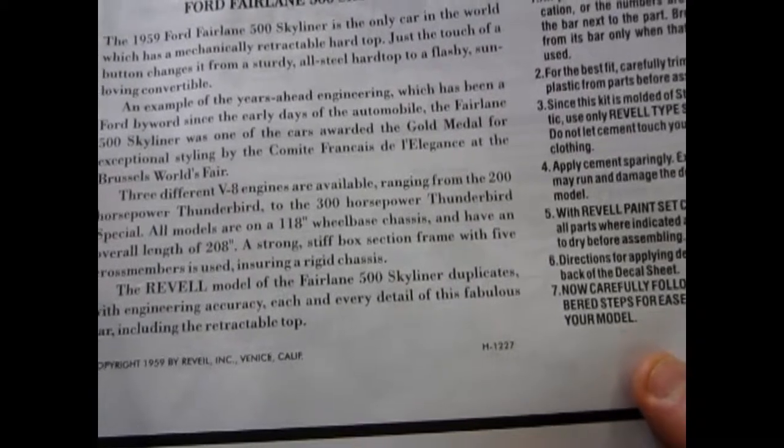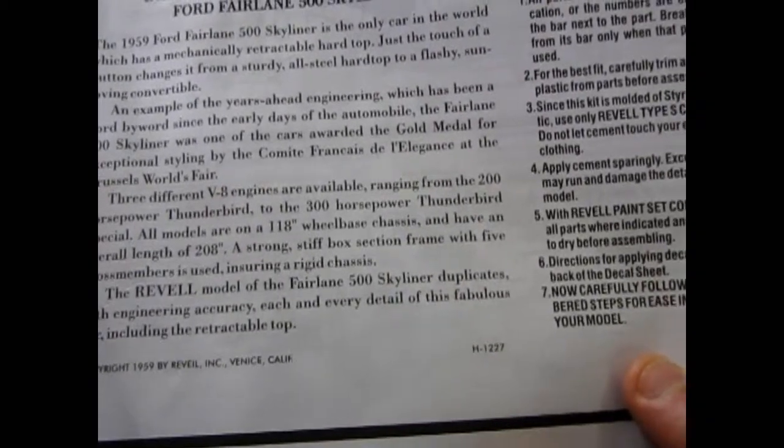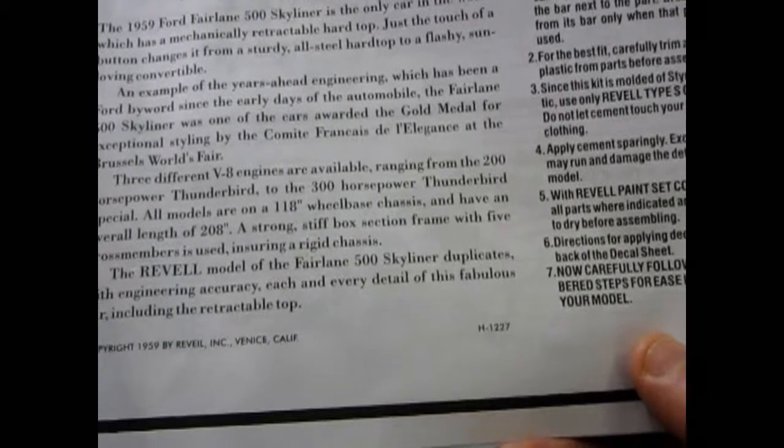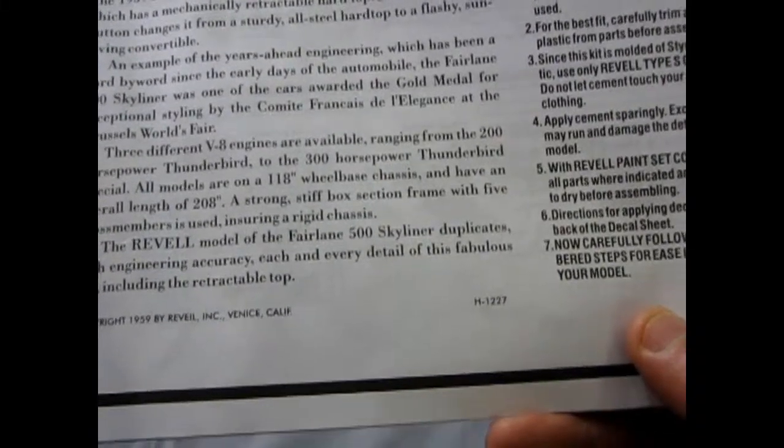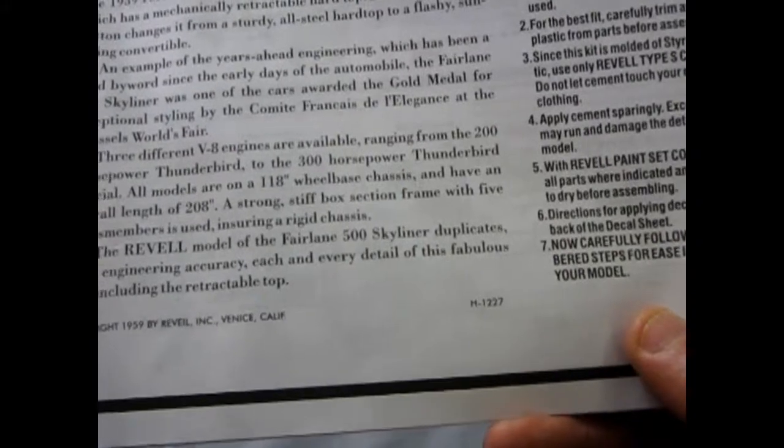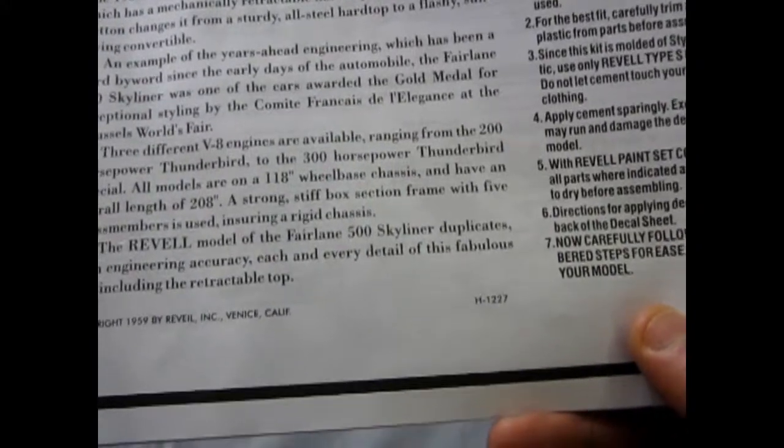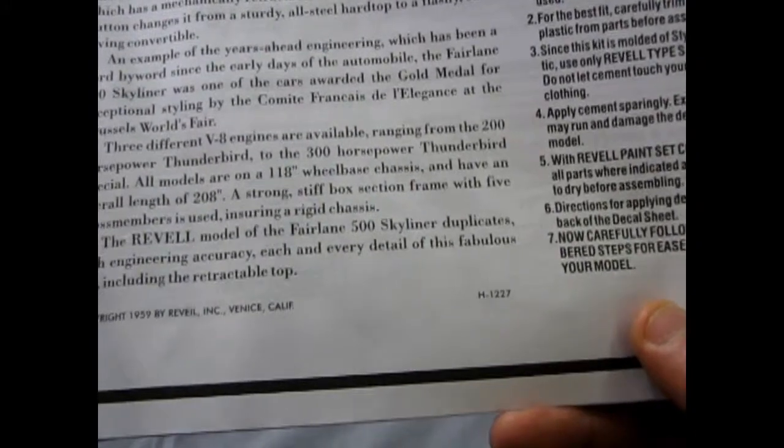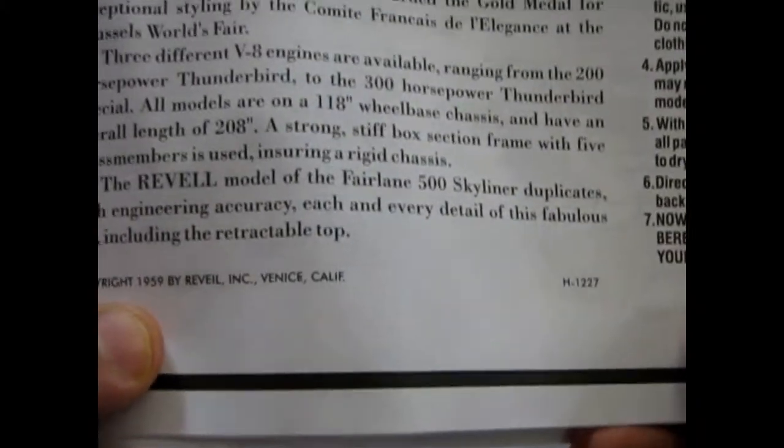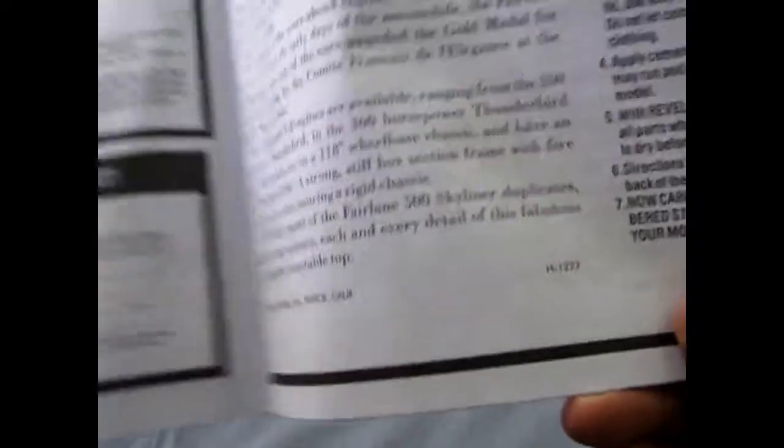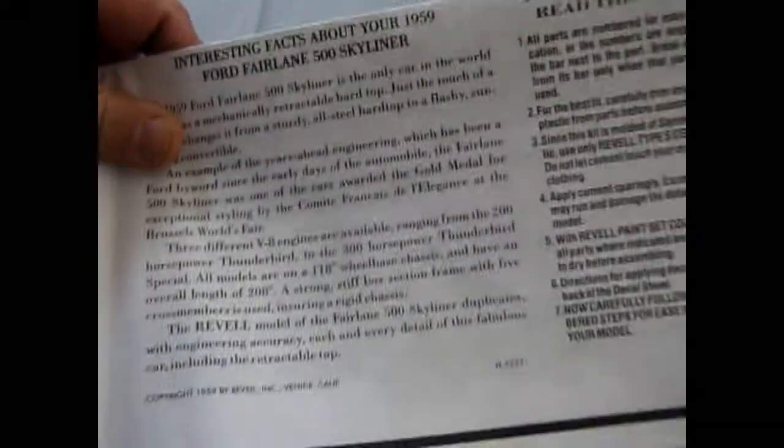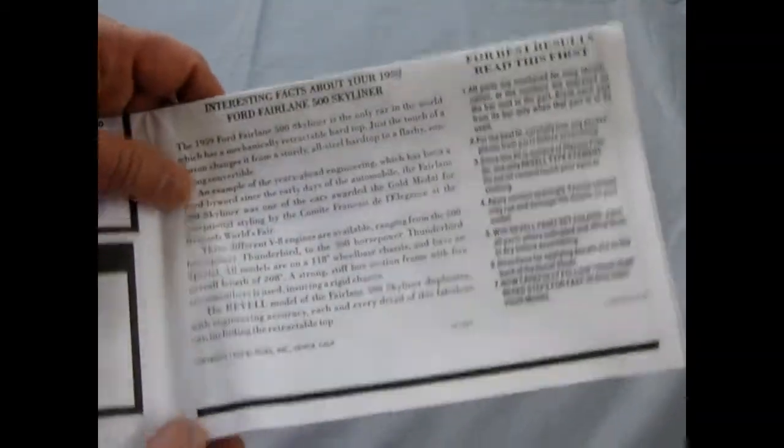All models are on a 118 inch wheelbase chassis and have an overall length of 208 inches. A strong stiff box section frame with five cross members is used, ensuring a rigid chassis. The Revell model of the Fairlane 500 Skyliner duplicates, with engineering accuracy, each and every detail of this fabulous car, including the retractable top. Copyright 1959 by Revell Inc., Venice, California. So yes, this is one of the original Revell kits, reproduced just for you.